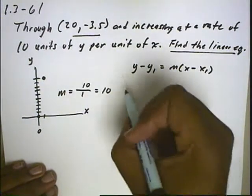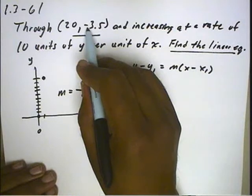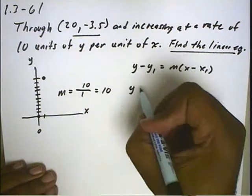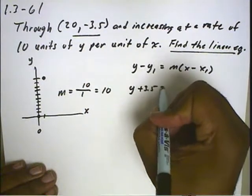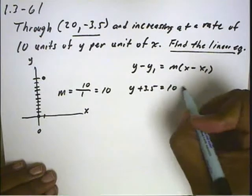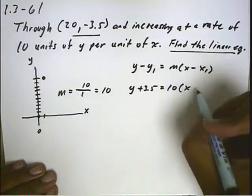So let's put those items in. Opposite of y will be the opposite of negative 3.5, which will be positive 3.5. The slope, again, is 10. And the opposite of x is negative 20.